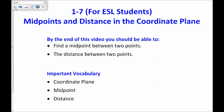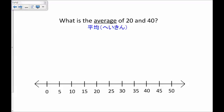And in this section, we are looking at midpoints and distance in the coordinate plane. What is the average of 20 and 40? Well, the average is 20 plus 40 divided by 2, which is 20 plus 40 is 60 divided by 2. And 60 divided by 2 is 30.